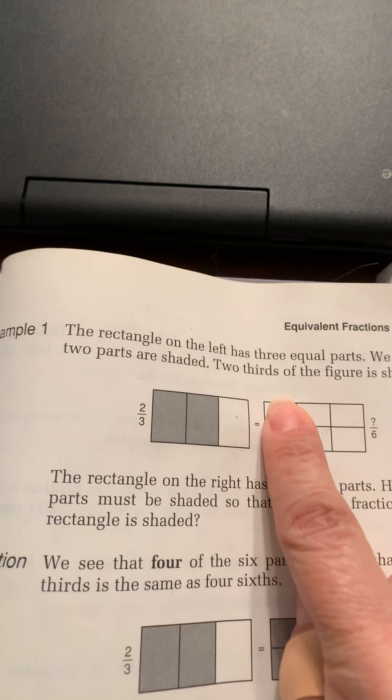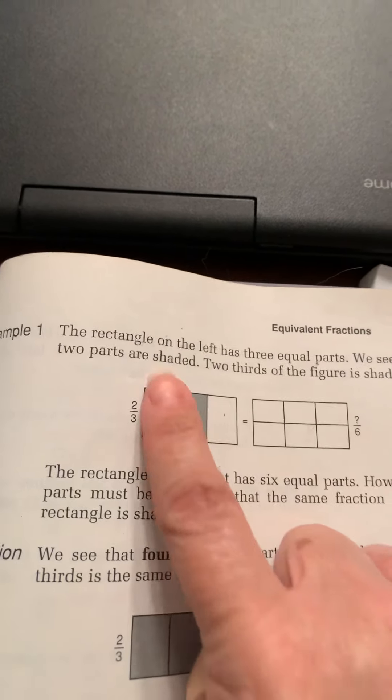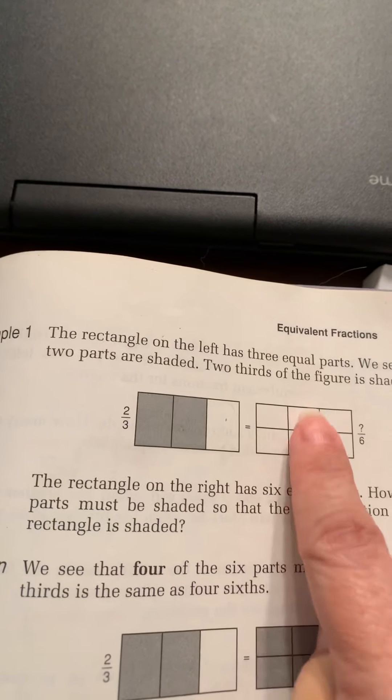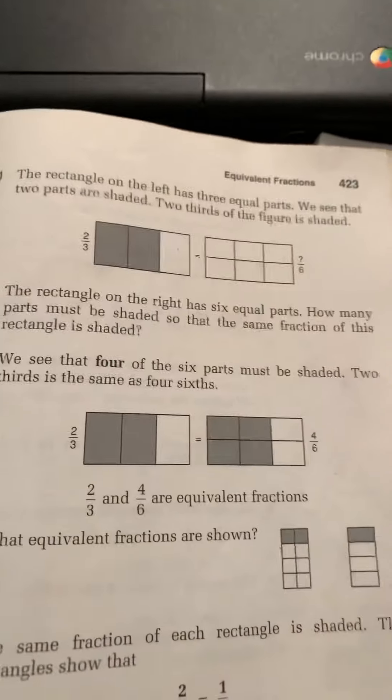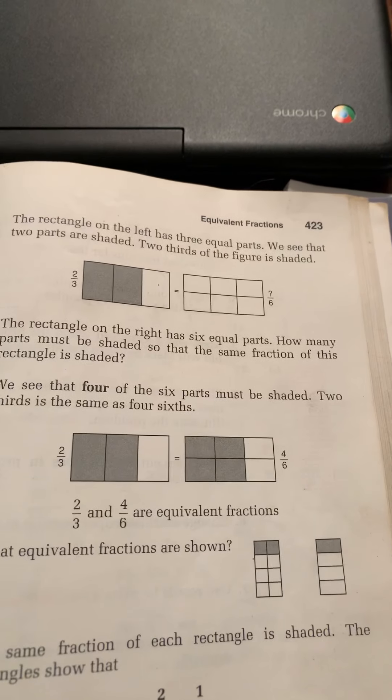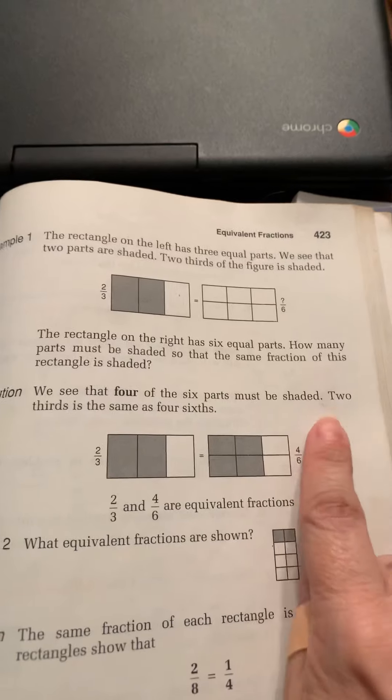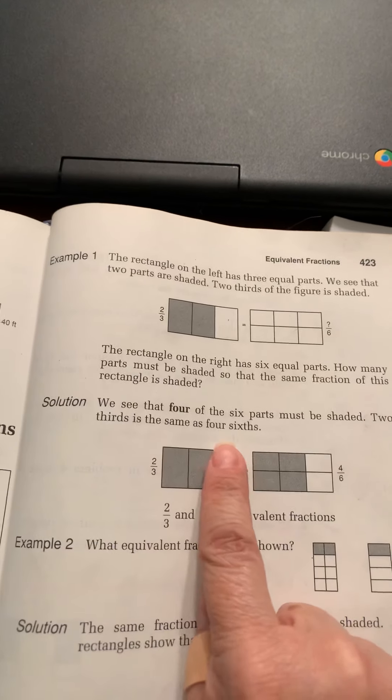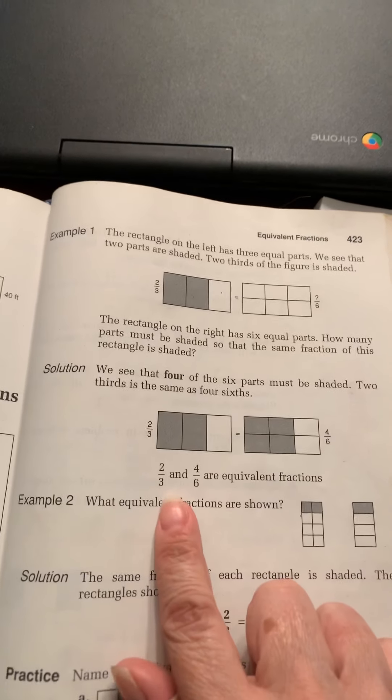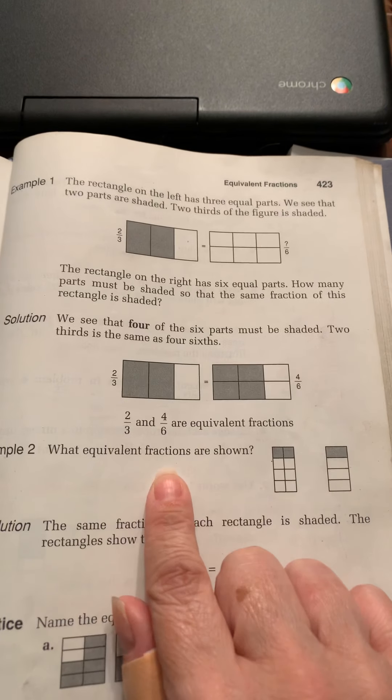So you would want to shade in one, two to represent these two, but it would be four pieces, four-sixths. So we see that four of the six parts must be shaded. Two-thirds is the same as four-sixths. So two-thirds and four-sixths are equivalent fractions.